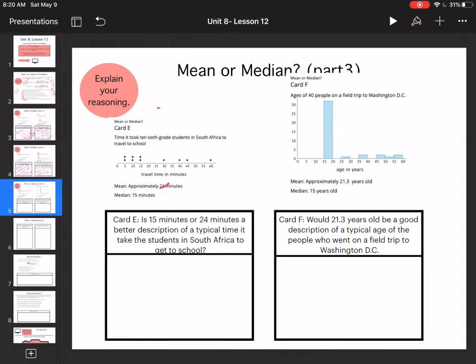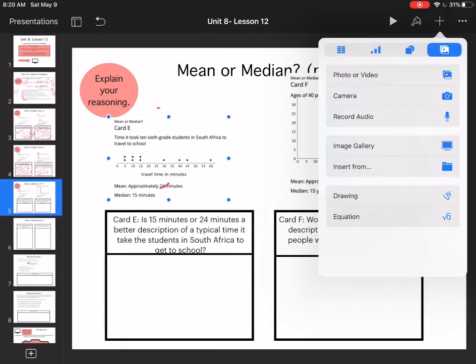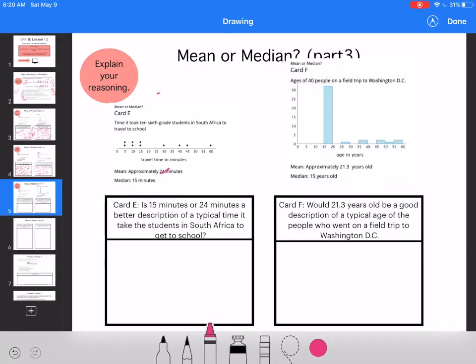So now it says is 15 or 24 minutes a better description of the typical amount of time it takes a student to get to school? When I look at my data, I can tell that the center is 15 minutes because I have four dots on this side and four dots on this side. So I would say 15 minutes, the median, it is the center of the data.